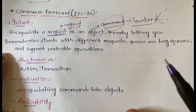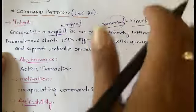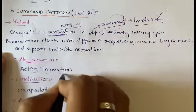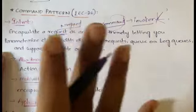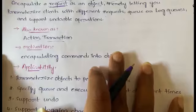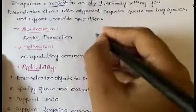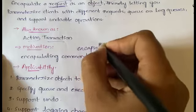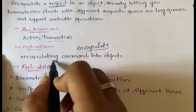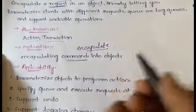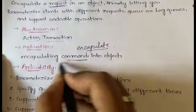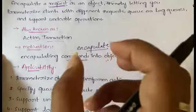From this you can also write the motivation. The Command pattern is also known as Action or Transaction. Moving into motivation: the main thing to remember is it encapsulates commands — which are nothing but method calls or requests — into objects. It will encapsulate the commands into objects and allow us to issue requests without knowing the request operation.